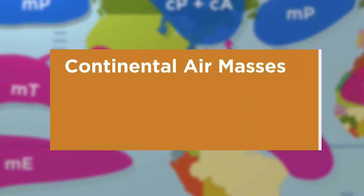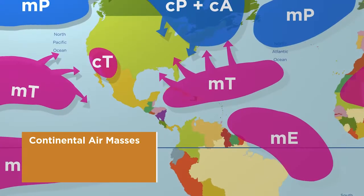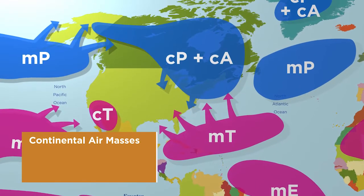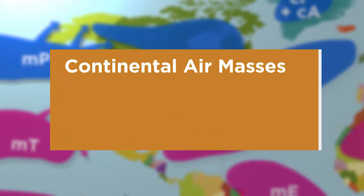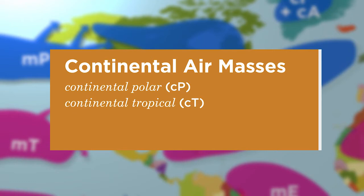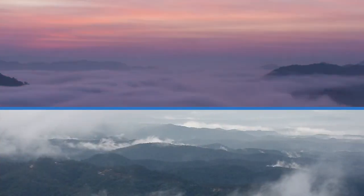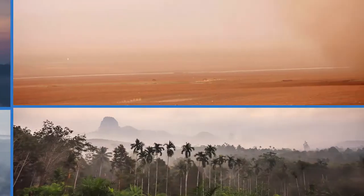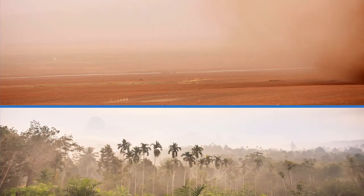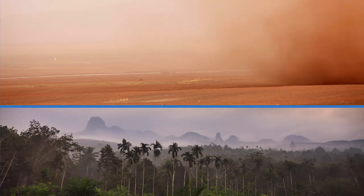Continental air masses form over continents. Because they form over land, they tend to contain less moisture. These air masses spend a lot of time over a continent before global winds push them along. There are two types of continental air masses: continental polar and continental tropical. Continental polar masses form over colder continental regions and tend to be cold and dry. Conversely, continental tropical air masses form over continental regions and carry warmer, drier air.